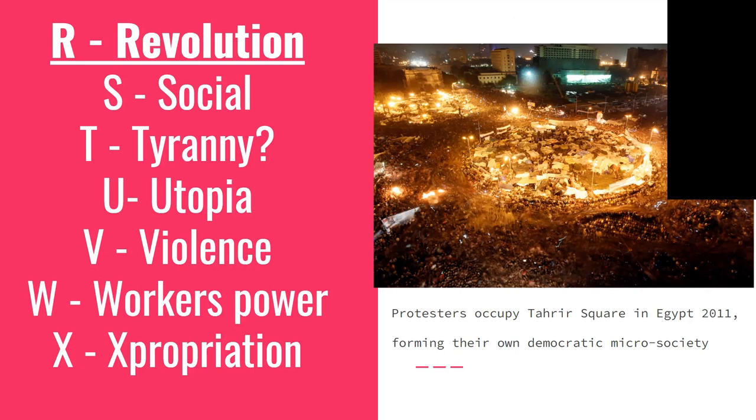T is for tyranny. Do revolutions always end in tyranny? The short answer is no. When you look at mass uprisings happening today, for example in Iran, the democratic spirit of these uprisings is obvious. Where we have seen repression following revolutions, this is most often the result of the defeat or counter-revolution against that uprising — we could look at Egypt after 2011, for example. It is convenient and hypocritical for opponents of revolution to argue they always lead to tyranny, when historically we have examples like Chile in the 1970s, where a popular uprising with huge democratic potential was violently put down and a tyrannical dictatorship was installed by the US.